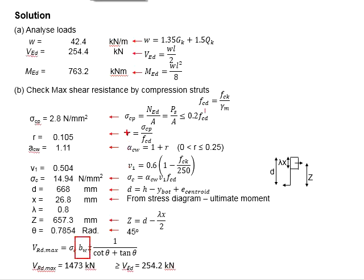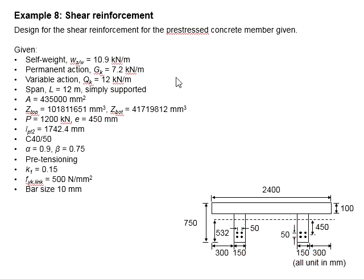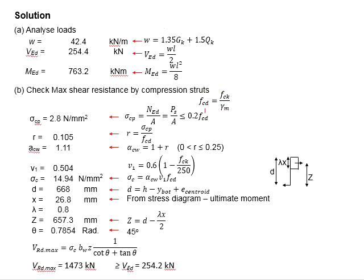The B here represents the width of the web. As based on the cross section, there are two webs. We can simply combine them together as the summation of the widths of both webs, which is equal to 300 mm. Next is to determine sigma_C, obtained from the equation here, which requires FCD. FCD is calculated as FCK divided by the partial factor of safety of concrete, which is 1.5. The FCK is taken as 40. You will also need to determine nu1, which is determined from an equation in terms of FCK. Substituting the relevant values, you get nu1.